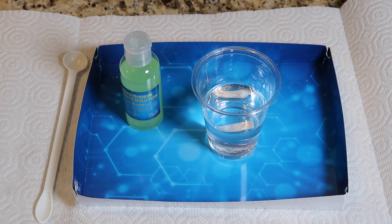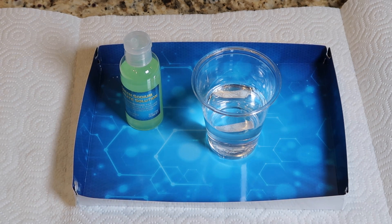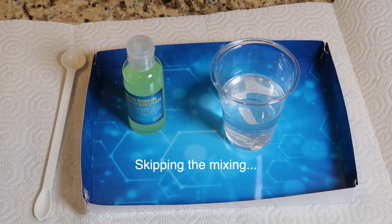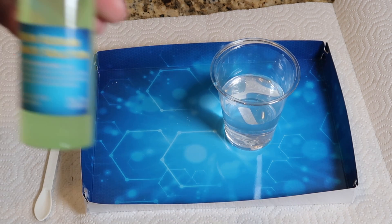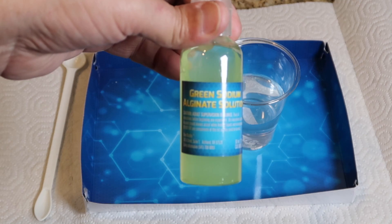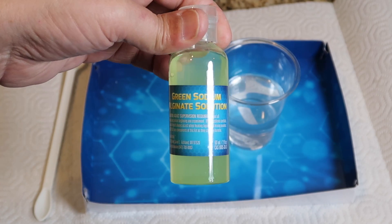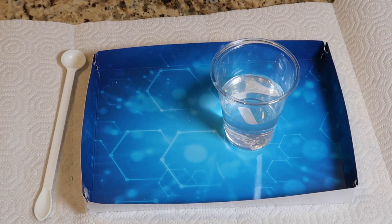Now we're going to make polymer worms. First thing we do is take half a tall cup of water and add one medium scoop of calcium chloride and dissolve it. Now we're going to use the green sodium alginate solution and squirt in some worms.